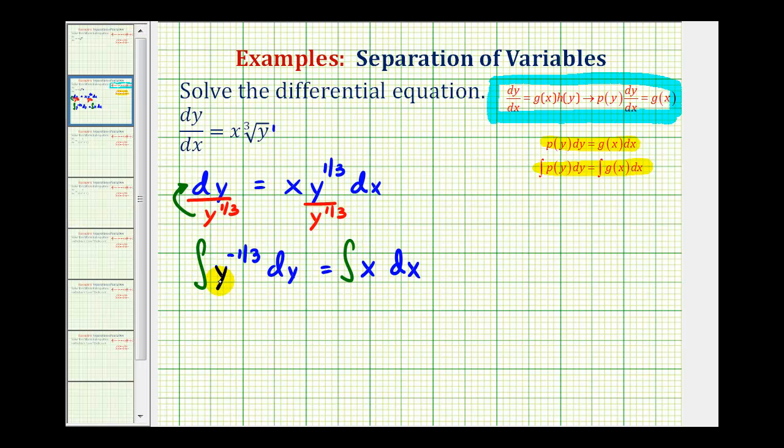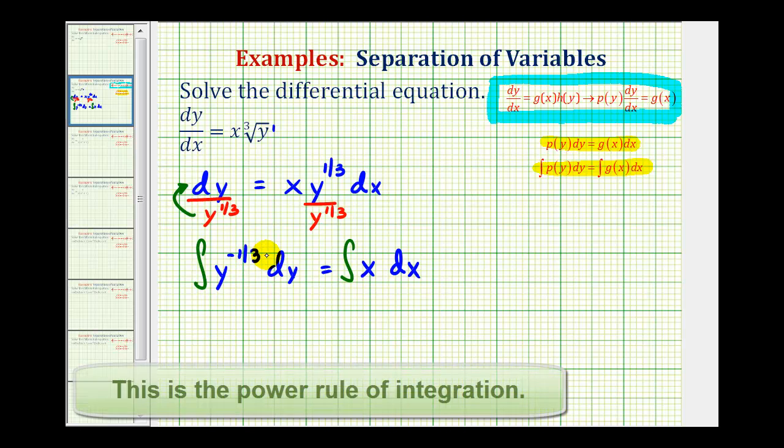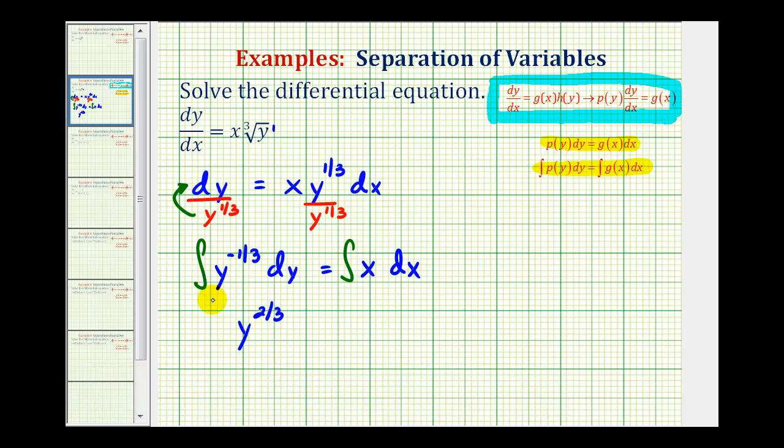Looking at the left side, to integrate y to the negative one-third with respect to y, we're going to add one to the exponent and then divide by the new exponent. So negative one-third plus one is going to be y to the two-thirds. And then we're going to divide by two-thirds or multiply by the reciprocal which would be three-halves. So we have three-halves y to the two-thirds.